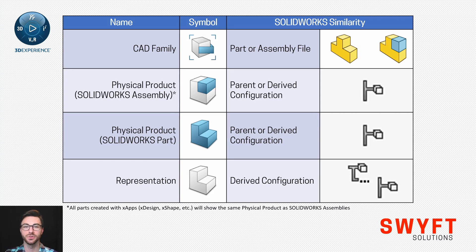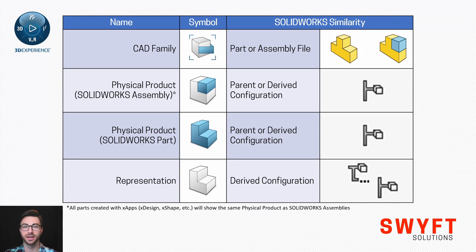A representation would only be comparable to a derived configuration — you would never draw a parallel between a representation and just a regular configuration. Something to note: if you're using X-apps like X-Design in 3D Creator or X-Shape in 3D Sculptor, any part that you make, even if it seems like just a single part, will use the symbol shown for the SOLIDWORKS assembly when a physical product is created.